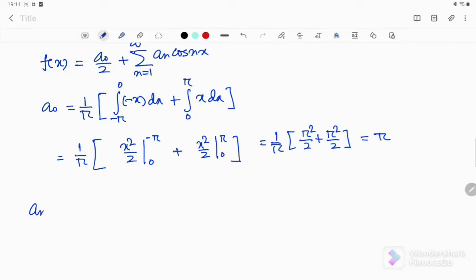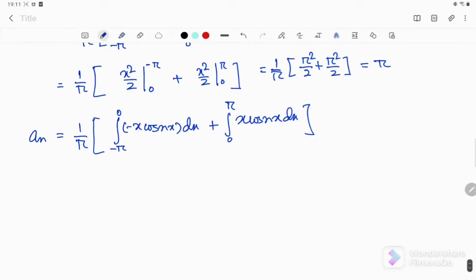Now let's find an. Again, I am using this: minus pi to 0 minus x cos of nx dx plus 0 to pi x cos nx dx. So integration by parts, and earlier in my videos regarding Fourier series, I have shown the simplest technique to find this kind of bypass integration very easily.